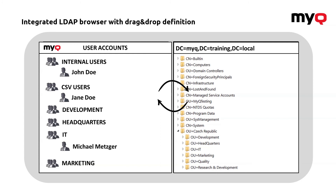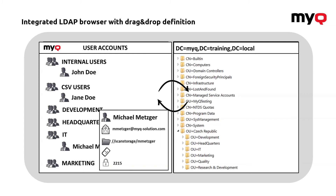As you can see here, I'll show you an example of one of my users where all the data were taken from your LDAP server and populated into MyQ. There is also another option — the G Suite synchronization — which is available for the central server, but we will mention that in an additional video.